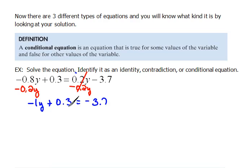Now we need to get our plain numbers together so I'm going to do the opposite of positive 0.3 by doing minus 0.3 on both sides which the opposite will undo that. And now on the left we have negative 1y equals and on the right we should have negative 4.